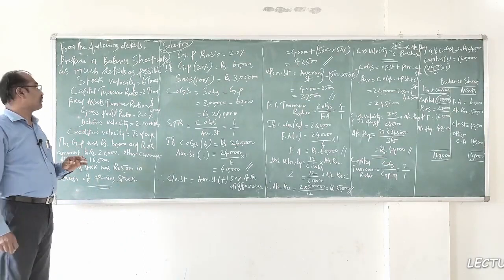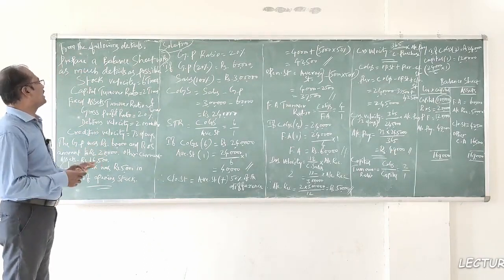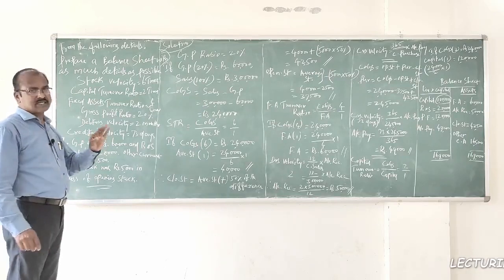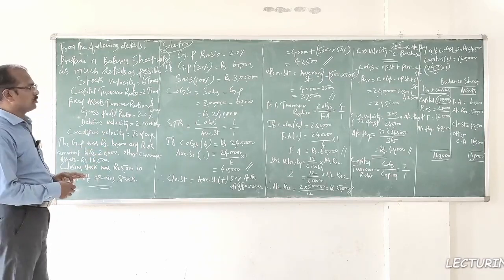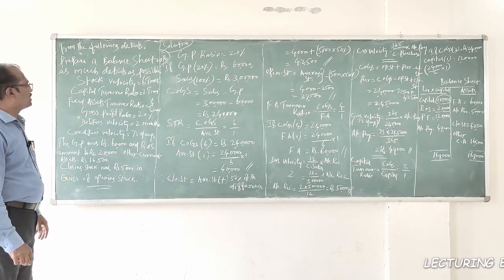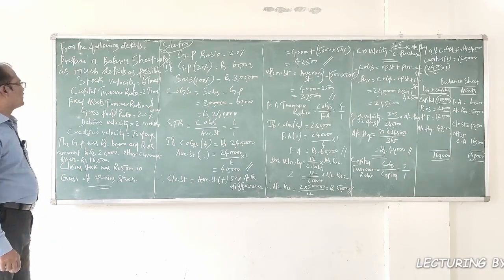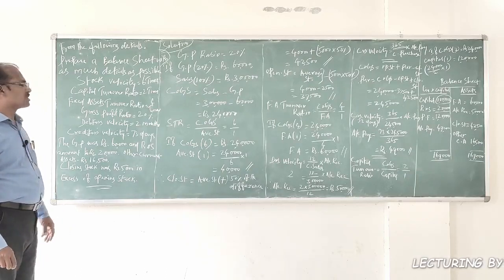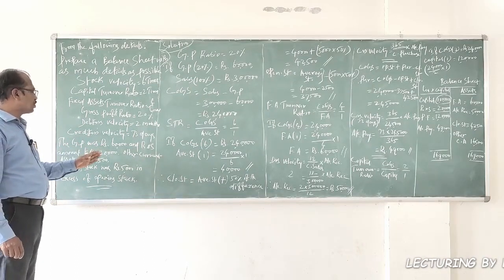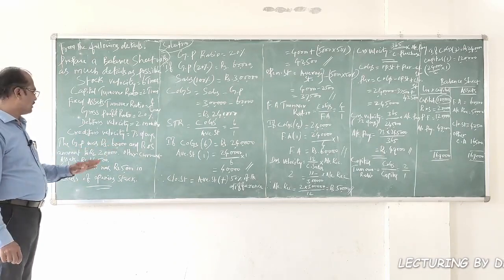Let's get into the problem. From the following details, prepare a balance sheet with as much details as possible. The given information are: stock velocity 6 times (stock turnover ratio), capital turnover ratio = 2 times, fixed assets turnover ratio = 4 times, gross profit ratio = 20%, debtors velocity 2 months, creditors velocity 73 days, gross profit = 60,000 rupees, and reserves and surplus = 20,000 rupees.